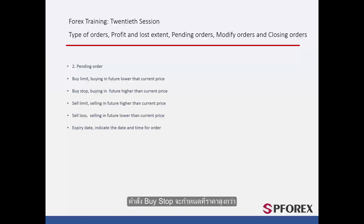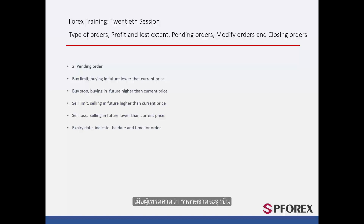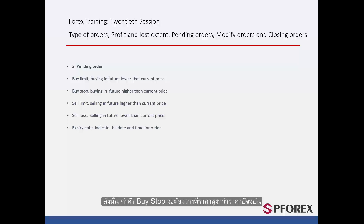Buy stop orders are assigned on a higher price when a trader predicts that the market price will go up to a certain amount followed by further increase. Therefore, a buy stop order must be placed on a price higher than the current price.